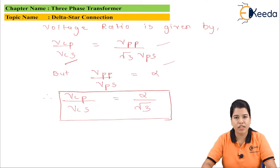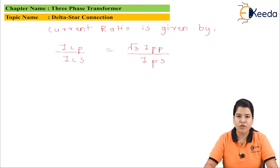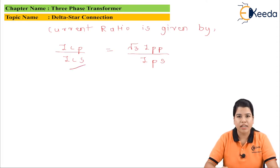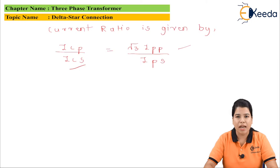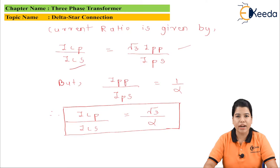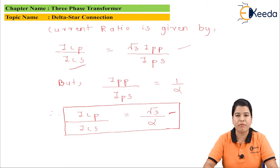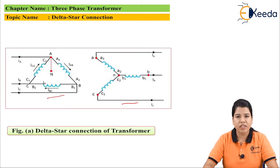Similarly, we can find the value of the current ratio. The current ratio is given by: ILP divided by ILS equals root 3 times IPP divided by IPS. Since IPP divided by IPS equals 1 divided by alpha, substituting this value gives us: ILP divided by ILS equals root 3 divided by alpha.